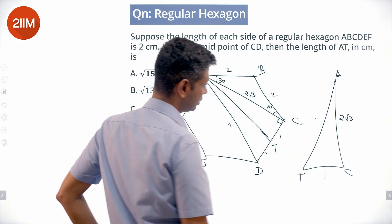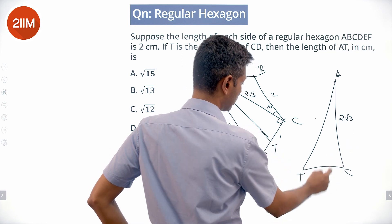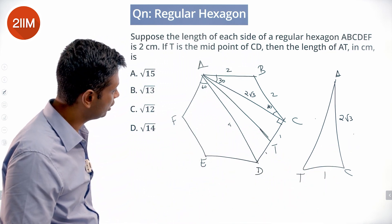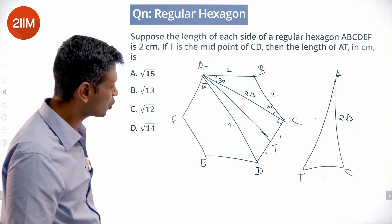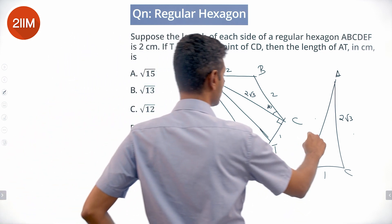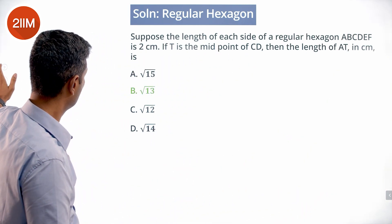So (2√3)² equals 3 into 2, 12. 12 plus 1² adds up to 13. Hypotenuse, so square root of 13 should work. Let me just check that. Perfect.